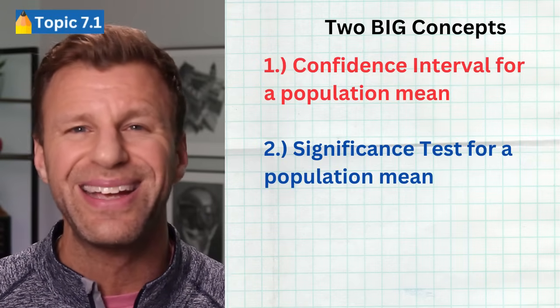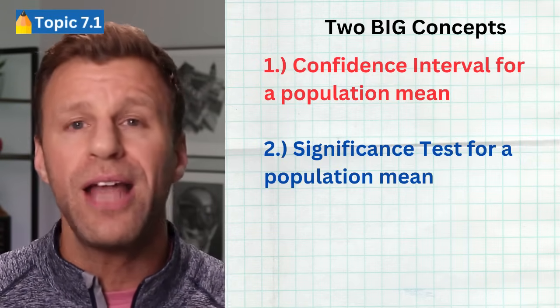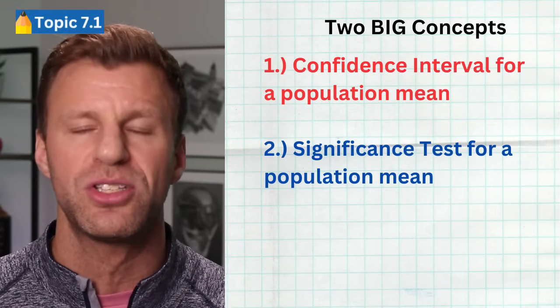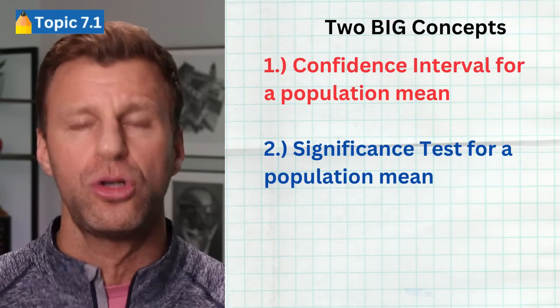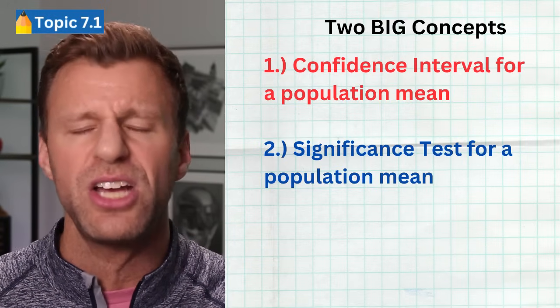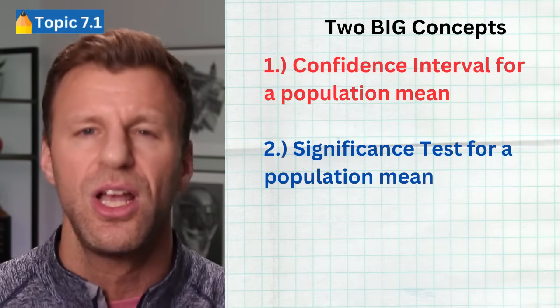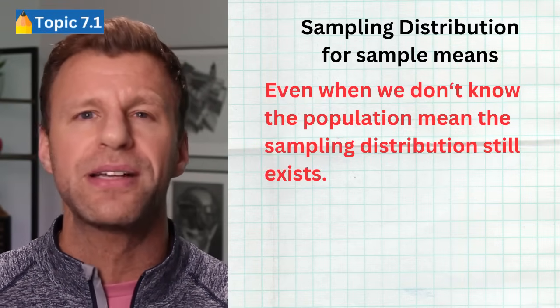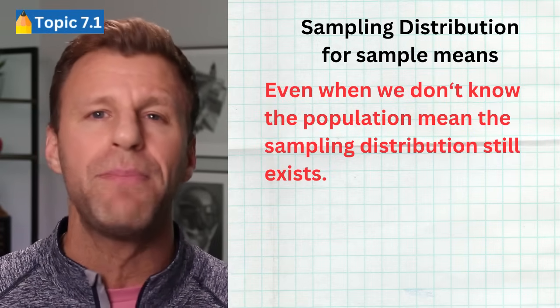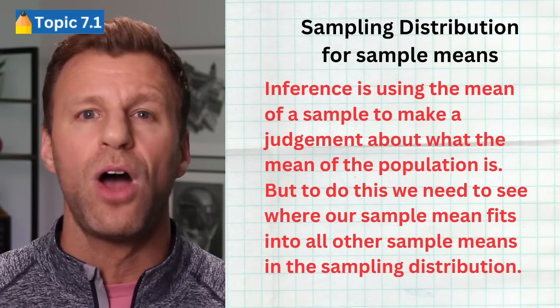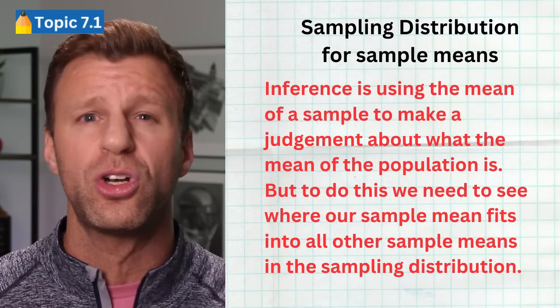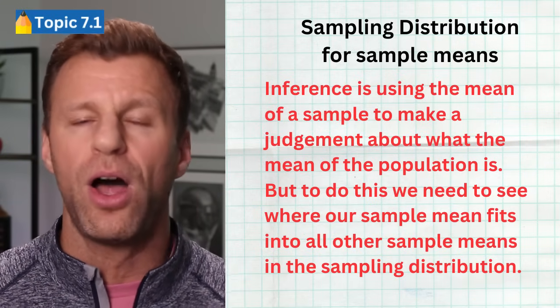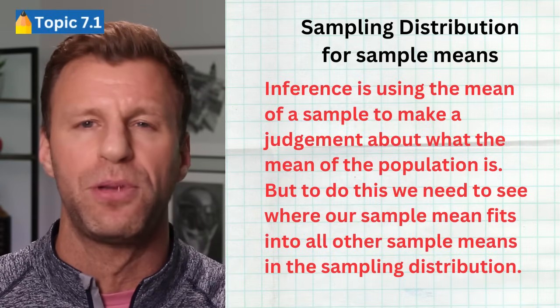This unit covers two huge concepts: confidence intervals for a population mean, and significance tests for a population mean. Both of these concepts hinge on sampling distributions. To build a sampling distribution, you need to know the true population mean and the true population standard deviation. But if we don't know those things, the sampling distribution still exists — we just have to estimate what it could look like, because it's important to understand that there are many, many possible sample means out there, and ours is just one of them, and we really hope it's close to the population mean.